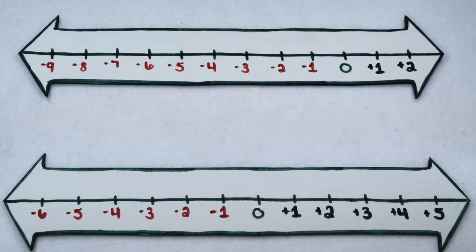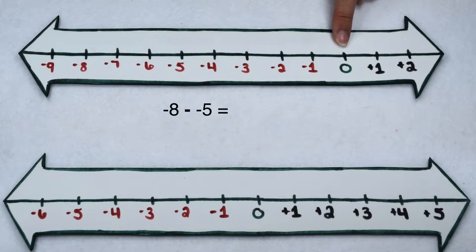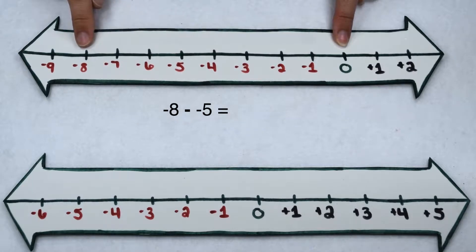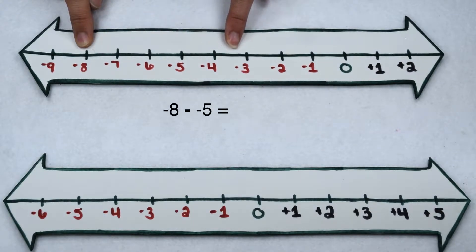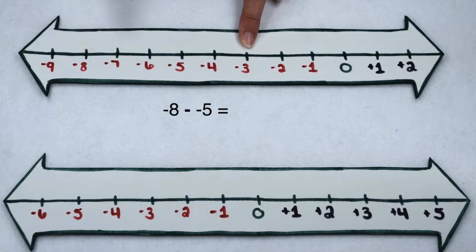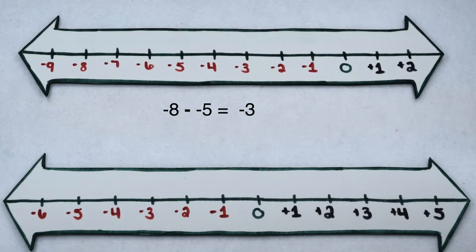We can follow this same train of thought for subtracting with negatives. Let's try negative 8 minus negative 5. To do that, I'm going to start at 0. Negative 8 is going to send me 8 places to the left. To then take away negative 5, I'm going to wind up going 5 places in the opposite direction, which means I'm going to go 5 places to the right, which lands me at negative 3. So negative 8 minus negative 5 is negative 3.